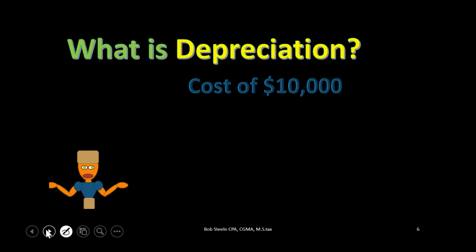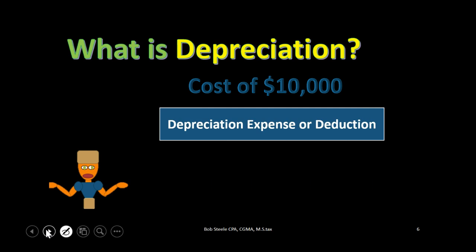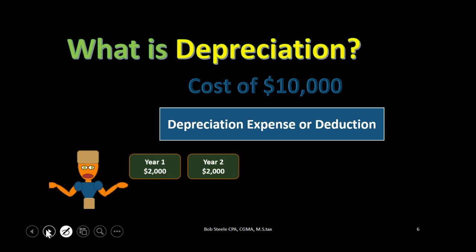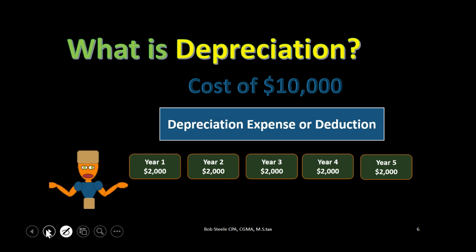An example: say we spent $10,000 on a forklift. If it had a five-year useful life and we used a straight-line method, we would have depreciation — an expense and a deduction for taxes. That would be $2,000 a year: year one $2,000, year two $2,000, year three $2,000, year four $2,000, year five $2,000, adding up to the $10,000 total.